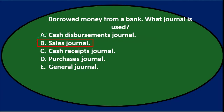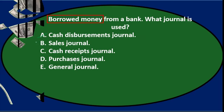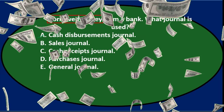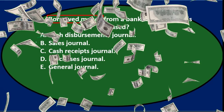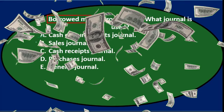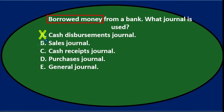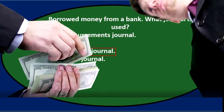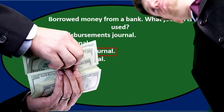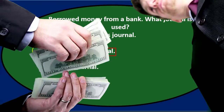B. Sales journal. Now the borrowing of money does result in us getting money, but the money is not a result of sales. Sales is going to be revenue if we sold something, so it's not going to be the sales journal. C. Cash receipts journal. Typically if we borrowed money, you would think that we got cash for borrowing it, so I'm going to keep that for now.